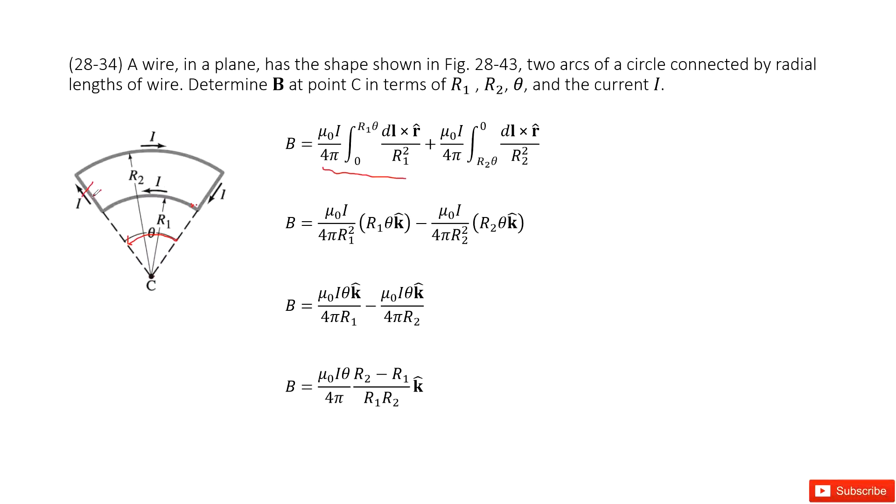And how about these two sections? It cancels. It's a straight line but the center just goes through it. So this one didn't produce the magnetic field at C. So we don't consider it. We just consider this arc and this arc.